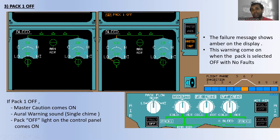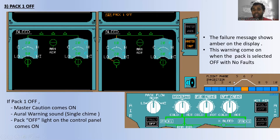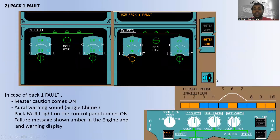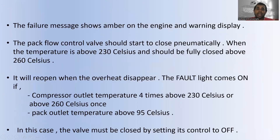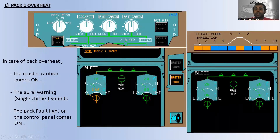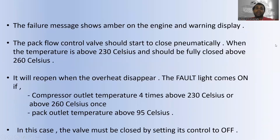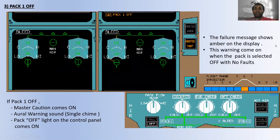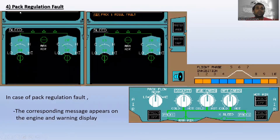Regarding flight phases: pack one off warning applies to flight phase number six. The pack one fault warning applies to flight phases one, two, six, nine, and ten. Pack one off caution also applies to flight phases one, two, six, nine, and ten.